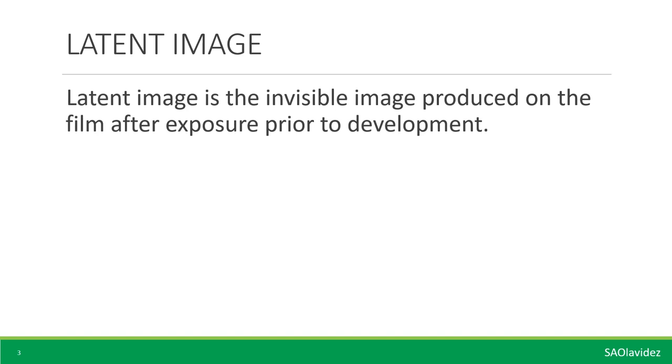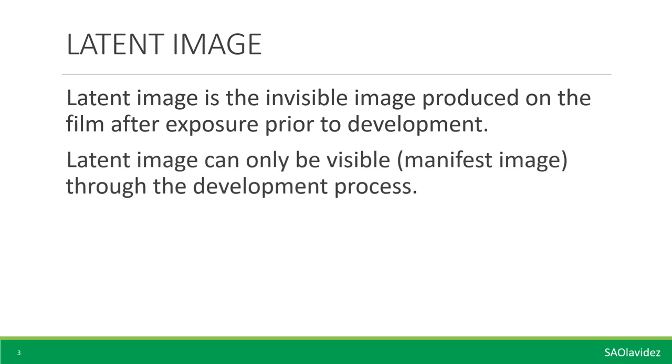What is a latent image? A latent image is defined as the invisible image produced on the film after exposure, prior to development. After exposure, changes have occurred on the chemical composition of the silver halide crystal. However, because it is very small, our naked eye cannot see it. Latent image can only be made visible through the development process.